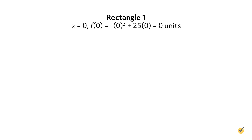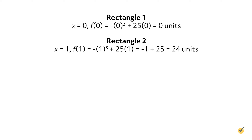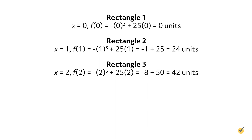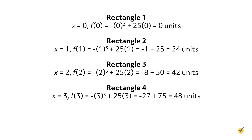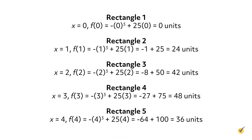The first rectangle, whose left corner lies on x = 0, will have a height of f(0) = −0³ + 25(0) = 0. The second rectangle's left corner lies on x = 1, so its height is f(1) = −1³ + 25(1) = −1 + 25 = 24. The third rectangle's left corner lies on x = 2, so its height is f(2) = −2³ + 25(2) = −8 + 50 = 42. The fourth rectangle's left corner is at x = 3, so its height is f(3) = −3³ + 25(3) = −27 + 75 = 48. The fifth rectangle has its left corner at x = 4, so its height is f(4) = −4³ + 25(4) = −64 + 100 = 36.